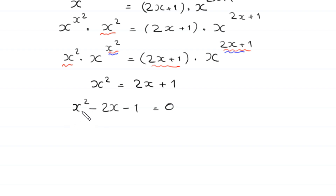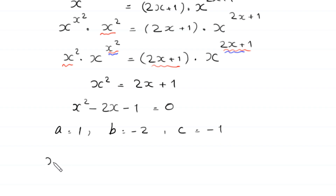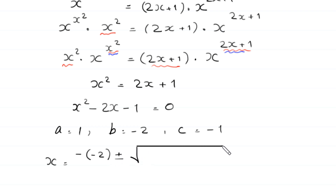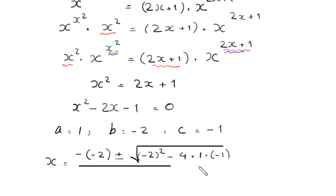This is a quadratic equation and is not factorable, so we solve it by the quadratic formula. In this equation, a equals 1, b equals negative 2, and c equals negative 1. According to the quadratic formula, x equals minus b, which is negative 2, plus or minus square root of b squared minus 4ac, divided by 2a.